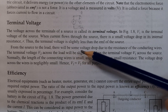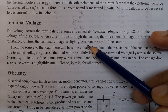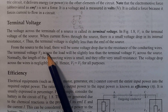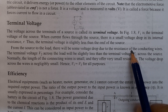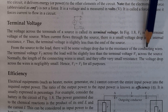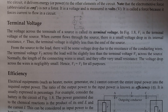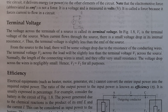The terminal voltage is slightly less than the EMF of the source. From the source to the load, there will be some voltage drop due to the resistance of the conducting wires.